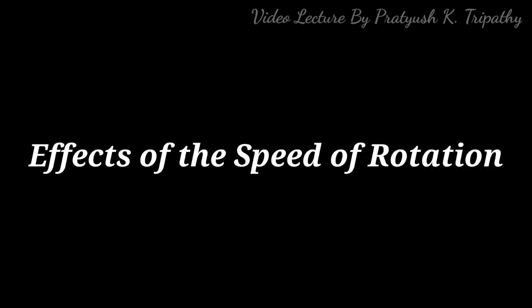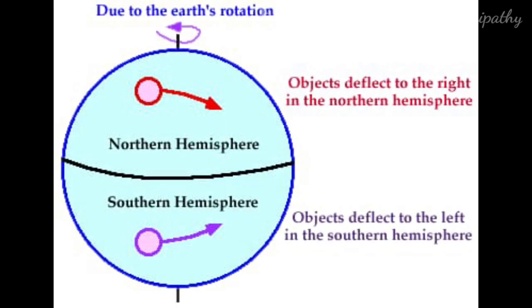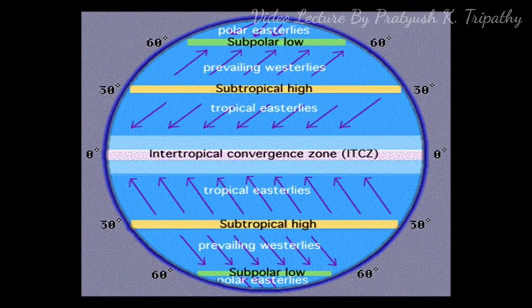Now, let's talk about the effects of the speed of rotation. Firstly, all the moving bodies on the Earth's surface, i.e. ocean currents and winds, are deflected towards the right in the northern hemisphere and left in the southern hemisphere due to Coriolis force created because of the rotation of the Earth. This is called Ferrell's law.